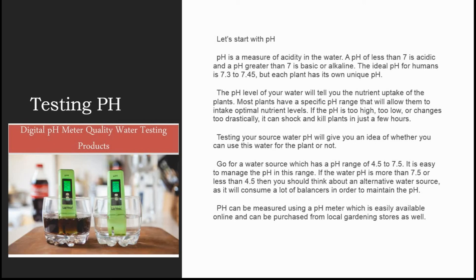If the pH is too high, too low, or changes too drastically, it can shock and kill plants in a few hours. Testing your source water pH will give you an idea of whether you can use this water for your plants or not. Go for a water source which has a pH range of 4.5 to 7.5.